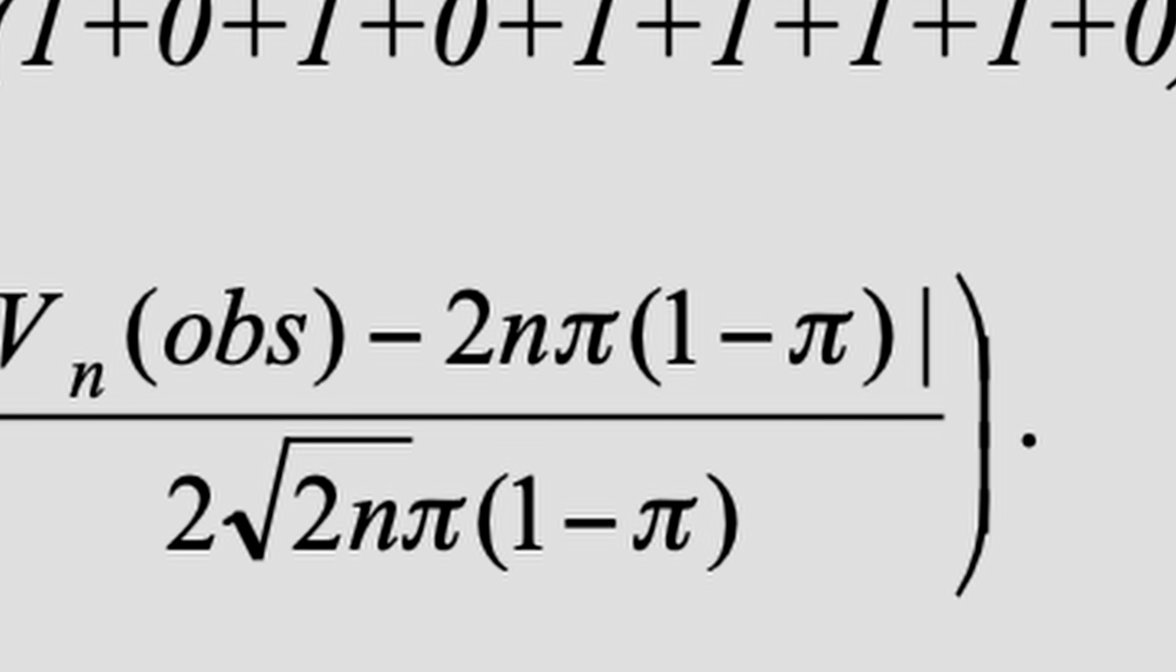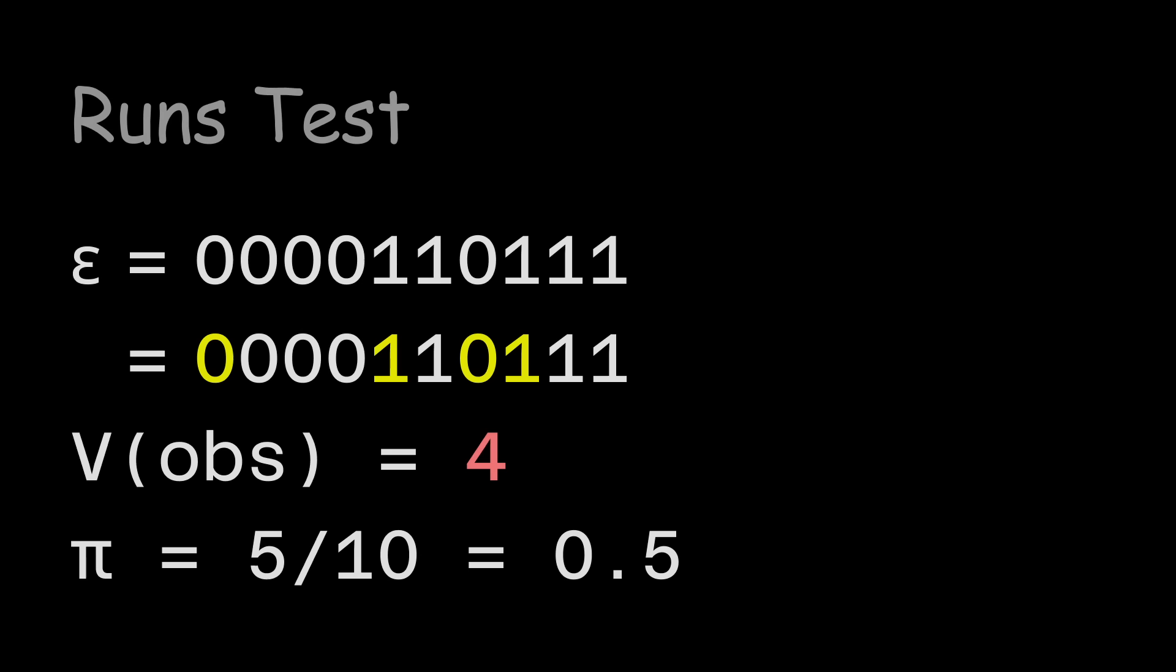Wait, what is this pi variable doing here? Apparently, we also have to calculate the proportion of ones in the binary string. In our case, it's 0.5.